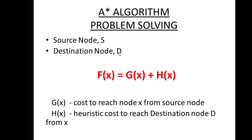h(x) is the heuristic value from node x to the destination — the straight line distance from x to destination d. So f(x) is the total path cost from source to x, plus the heuristic cost from x to destination. This is a greedy algorithm — when the agent is at one node, out of many choices it selects the one with the least f(x) value to proceed.